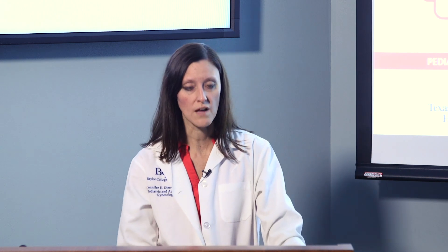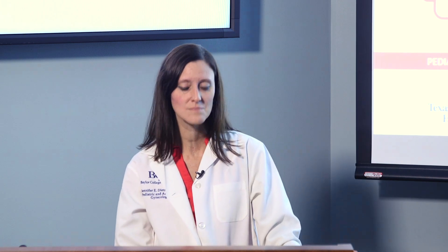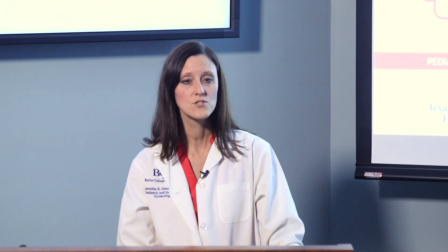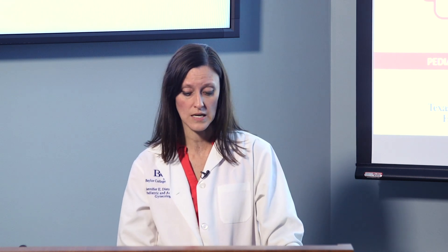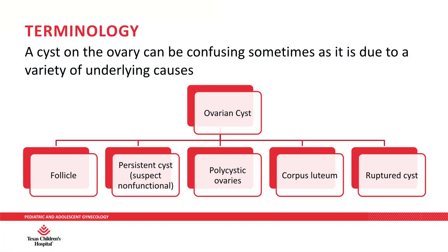Let's go over some basic terminology, because a cyst on the ovary can mean a lot of different things, and it's very confusing due to a variety of underlying causes. An ovarian cyst is typically a catch-all term, but it might mean it's simply a normal follicle, a persistent cyst suspected to be a non-functional variety, or that a woman has polycystic ovaries. It might mean there was a ruptured cyst, such as a corpus luteum — the cyst that gets left behind and produces hormones prior to the onset of a period for a young woman.